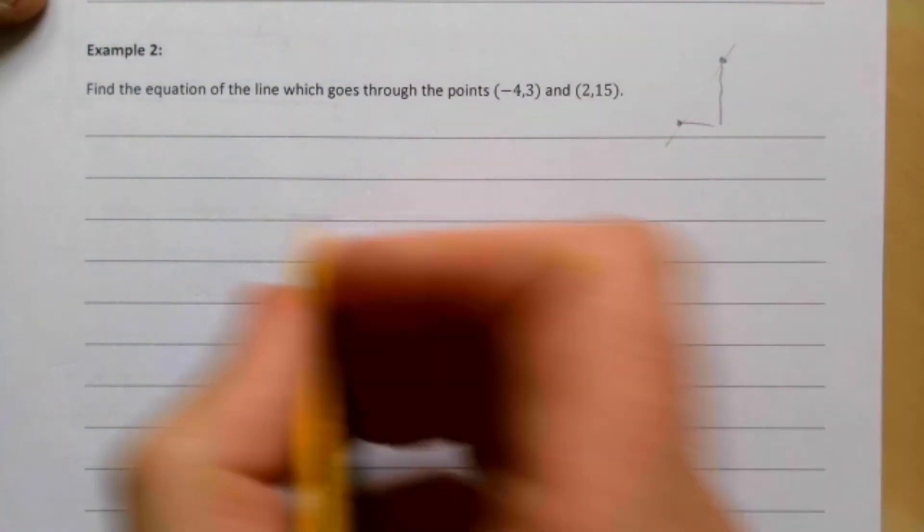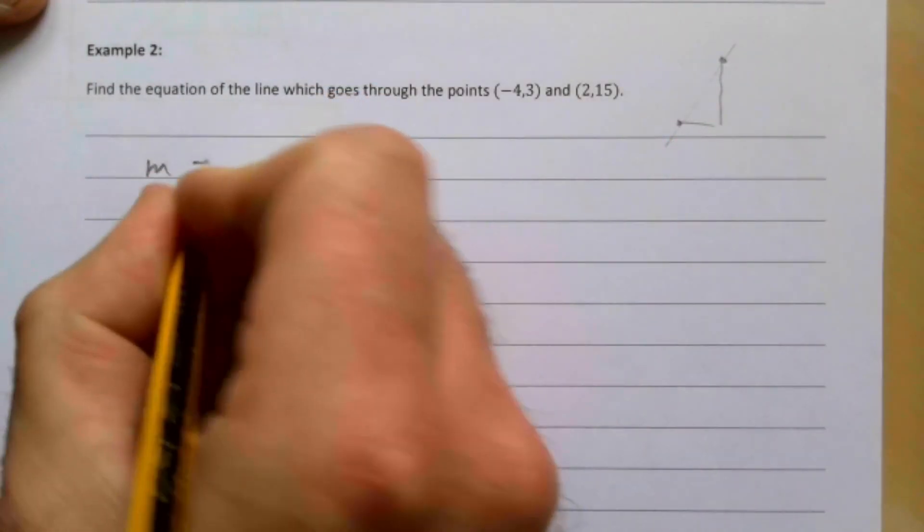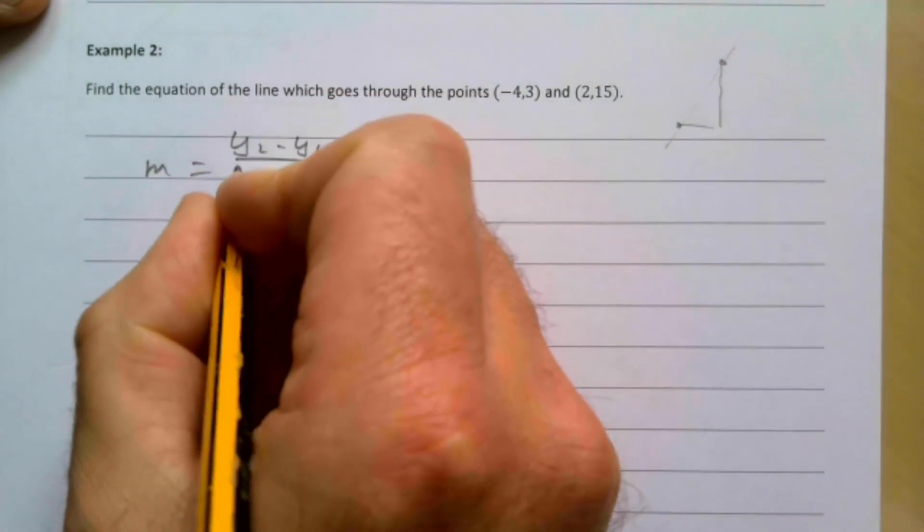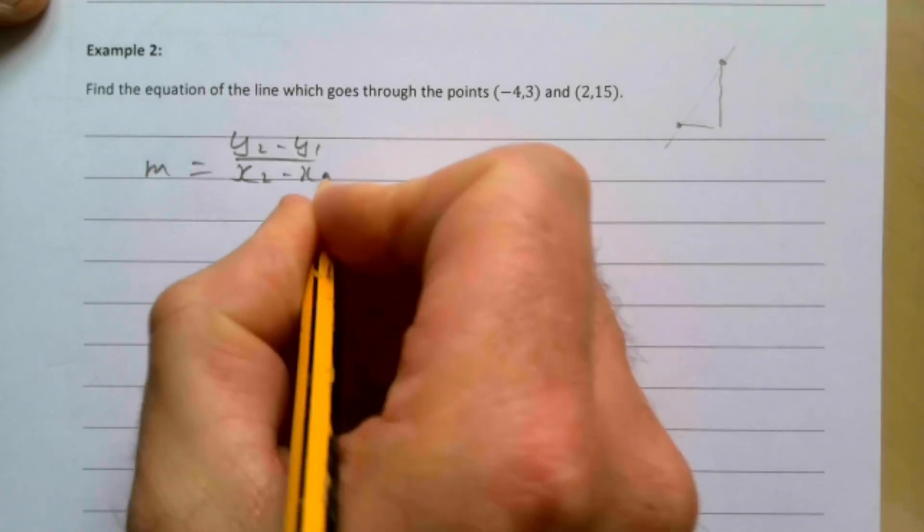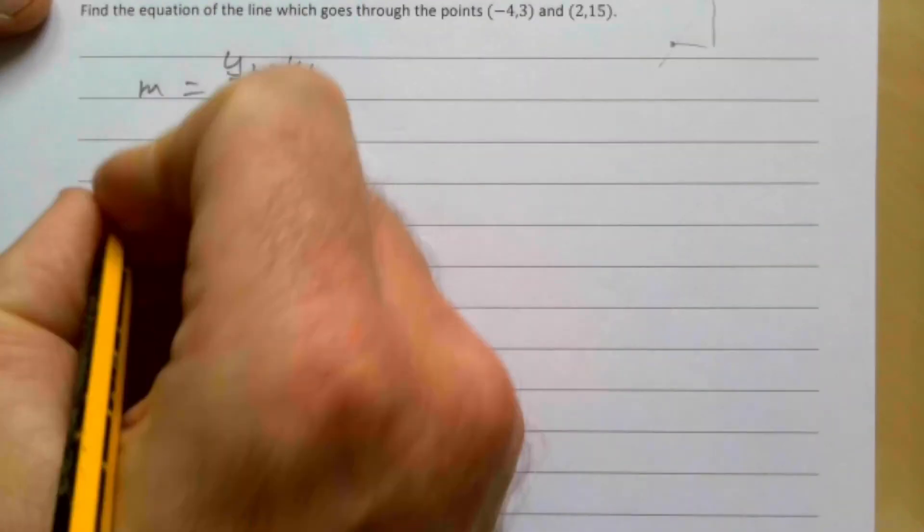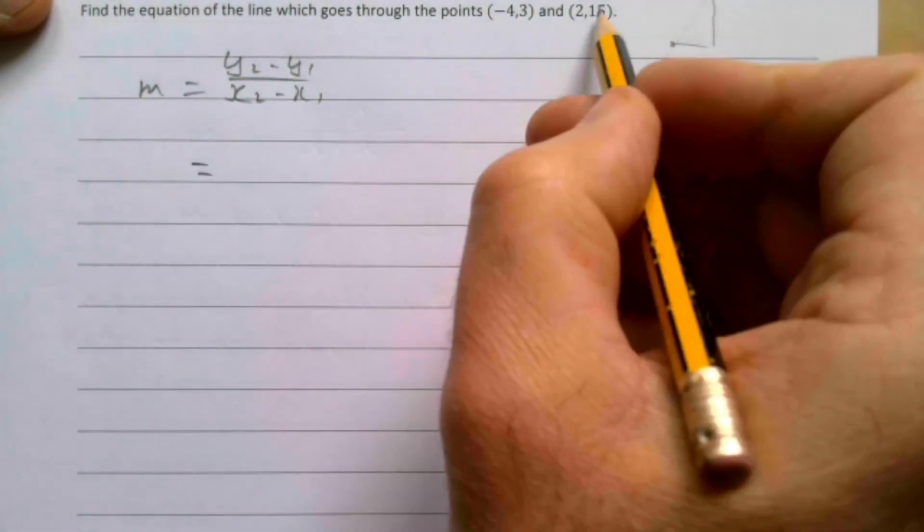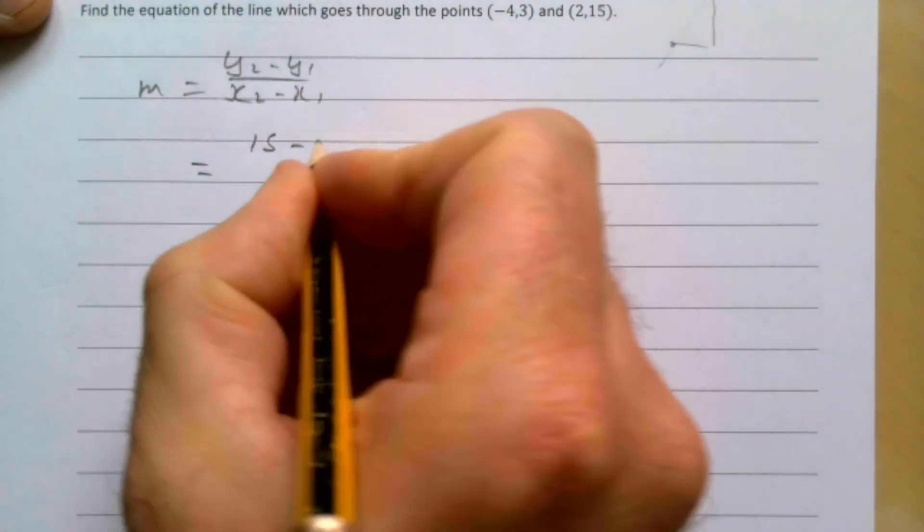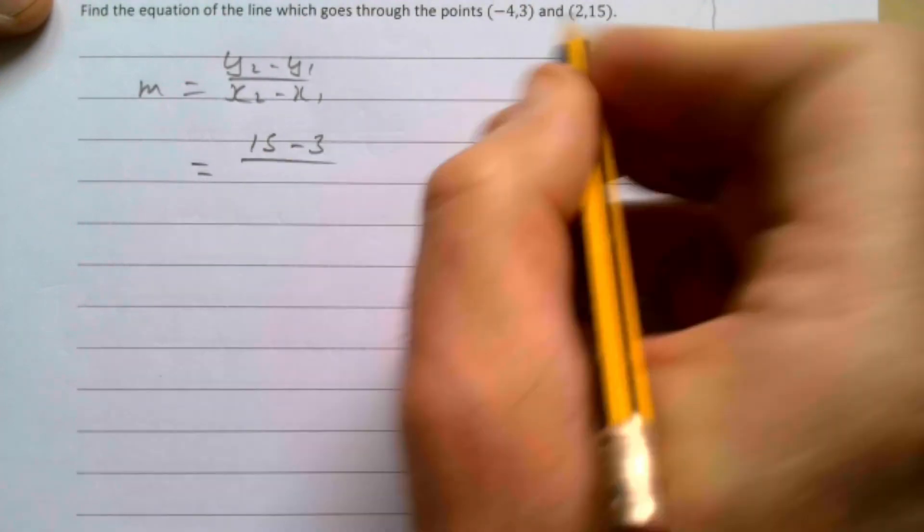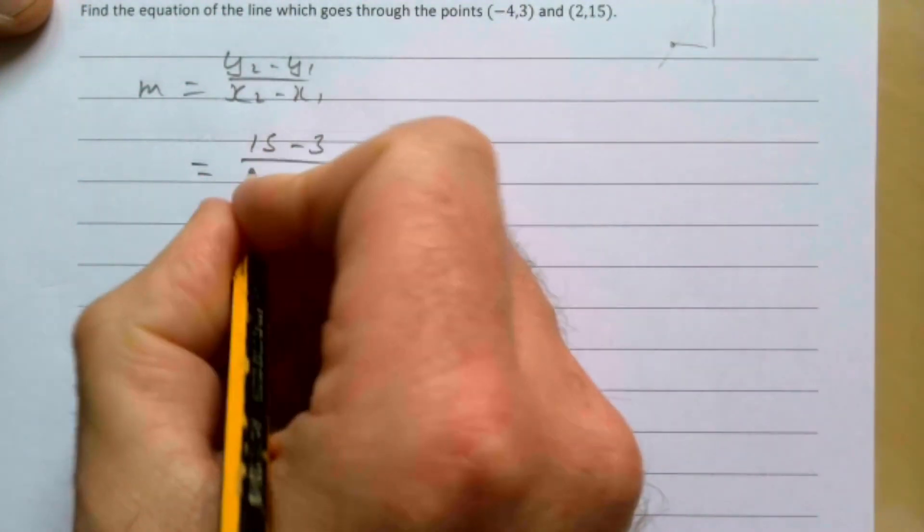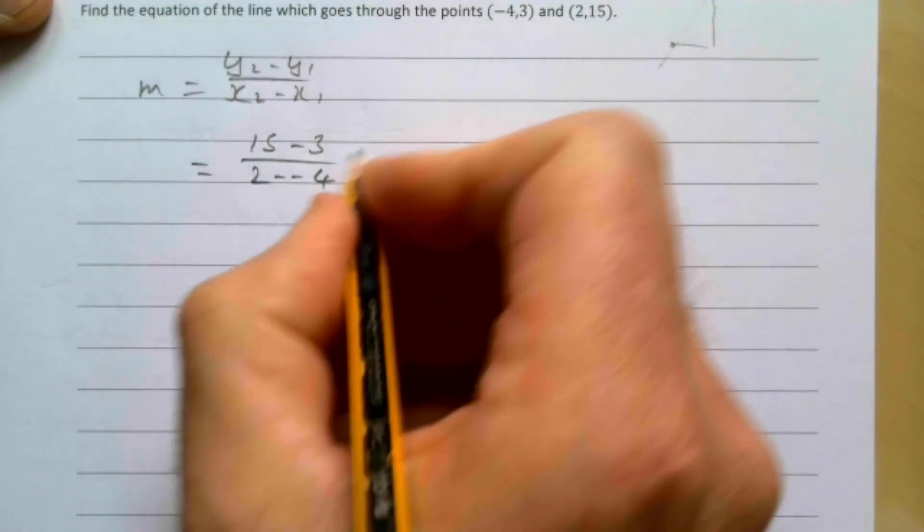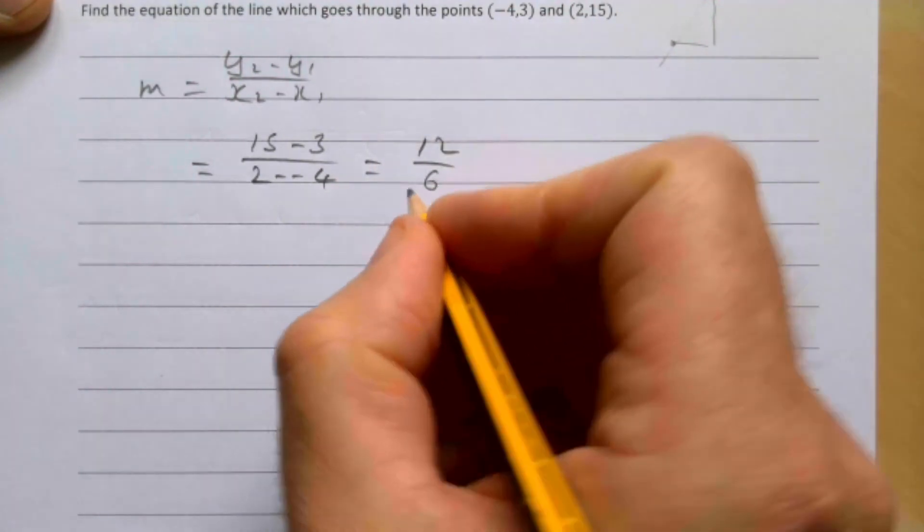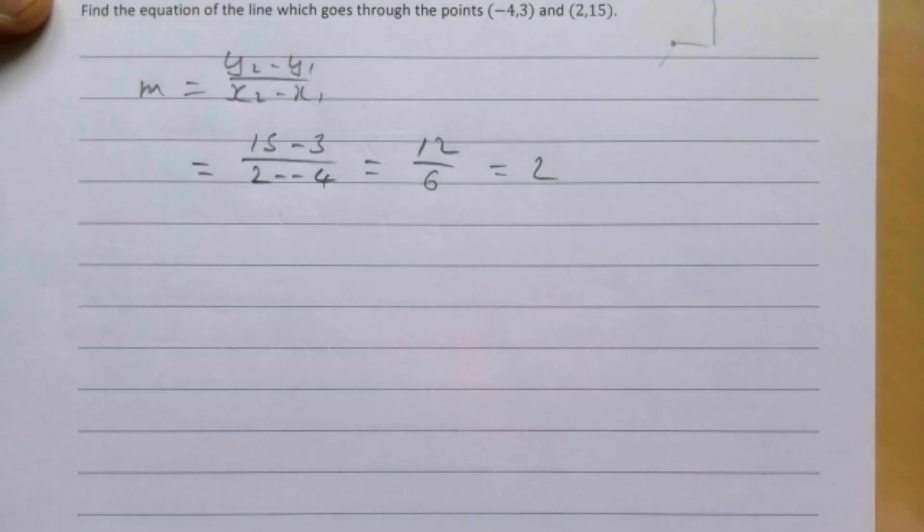So our gradient is going to be (y2 - y1) / (x2 - x1). y2 will take to be 15, then take away 3. And then 2 - (-4). So that's going to be 12/6. And our gradient then in this case is 2.